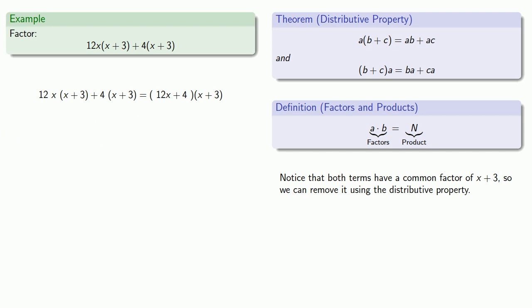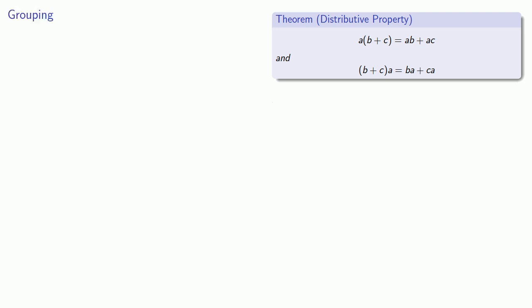Our factorization becomes 12x plus 4, times x plus 3. Now if factoring problems like that just fell out of the sky, factoring would be easy. What makes it difficult is that the factoring problems don't drop out of the sky neatly grouped — we have to do something to get there. And so this leads to the idea of factor by grouping.